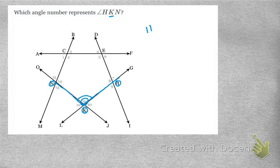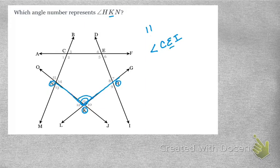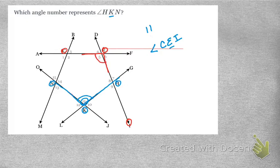Let's try angle CEI. Find the E first — there it is — then find the C and the I. Here's the C and here's the I. Connect them and you get angle 5. That's pretty much angle identification — it lets you easily find and identify an angle.